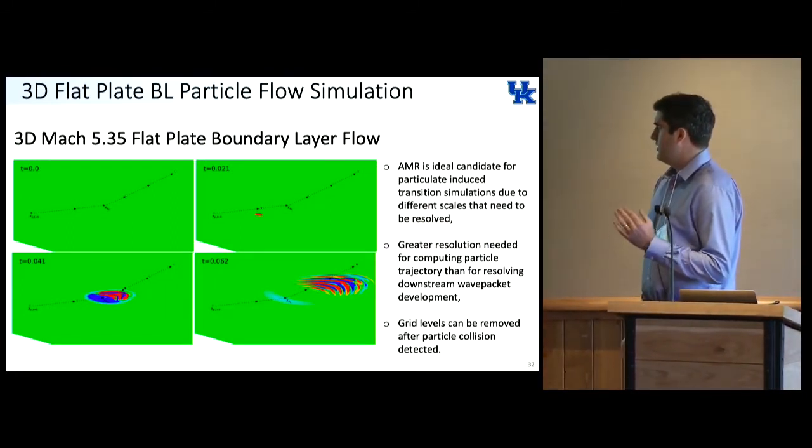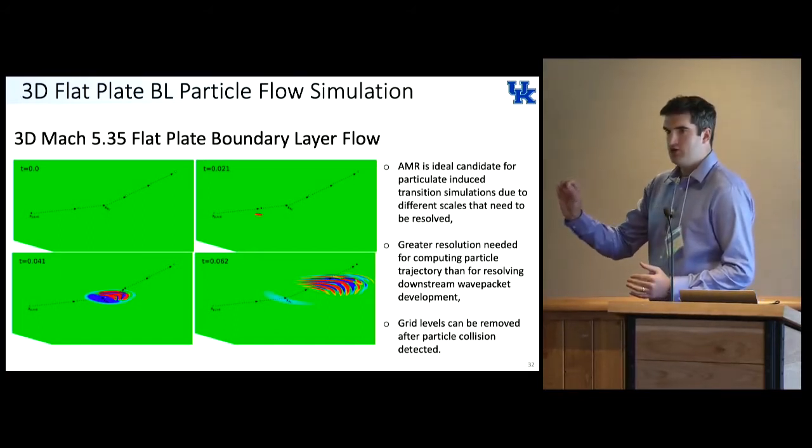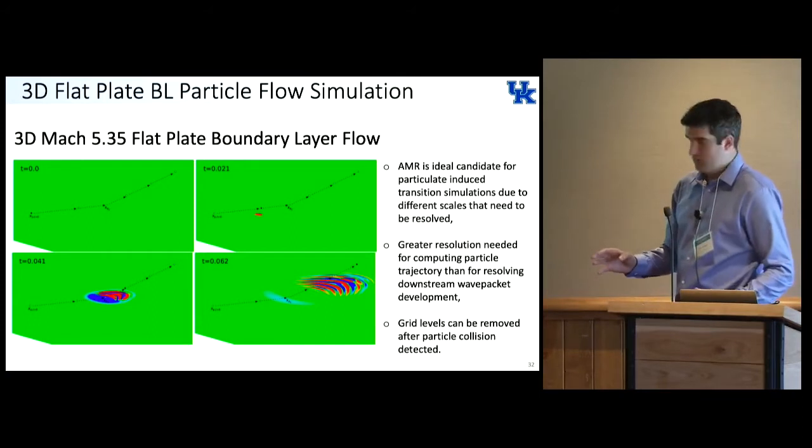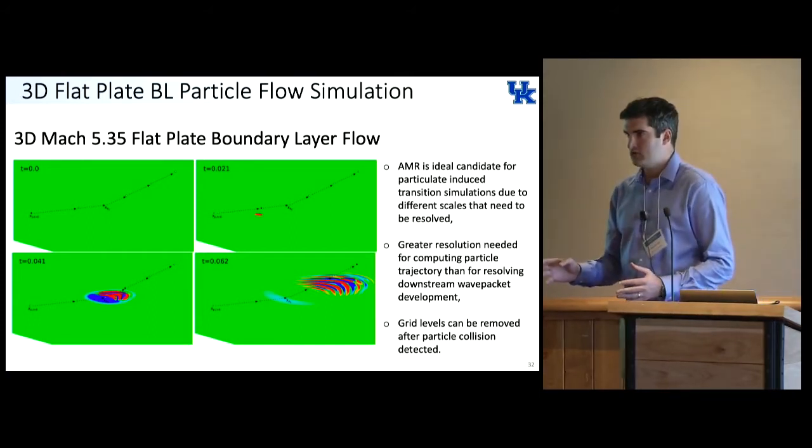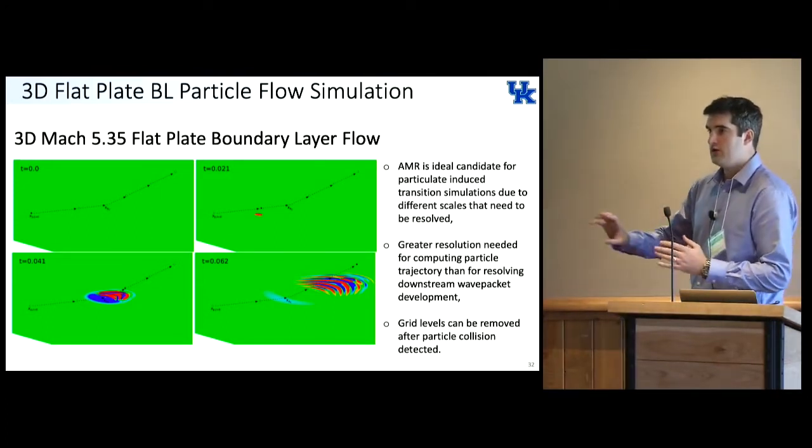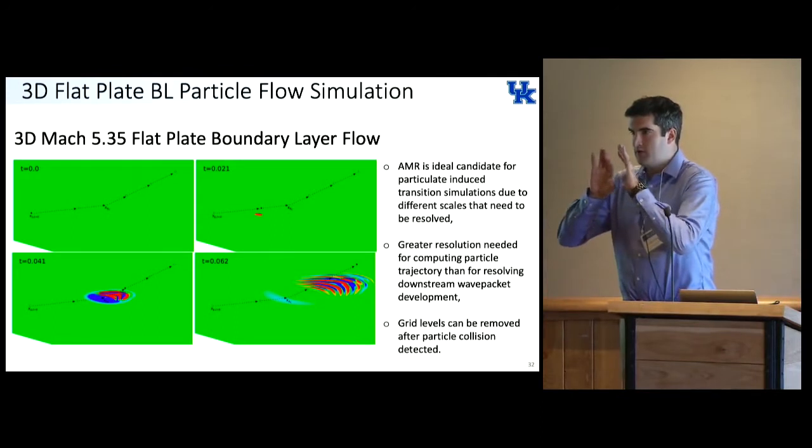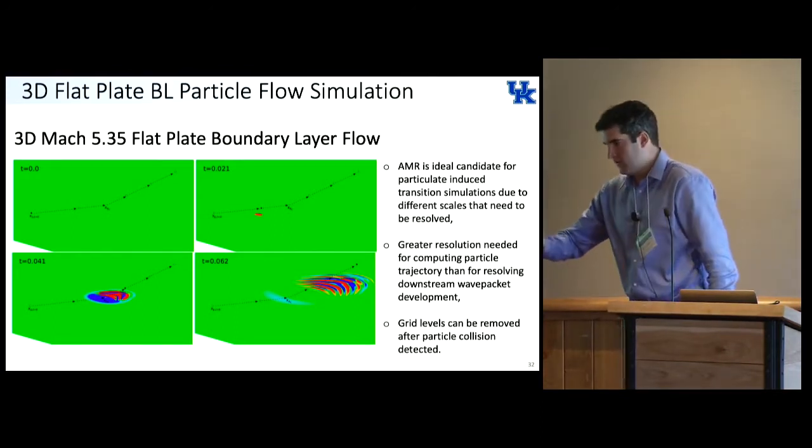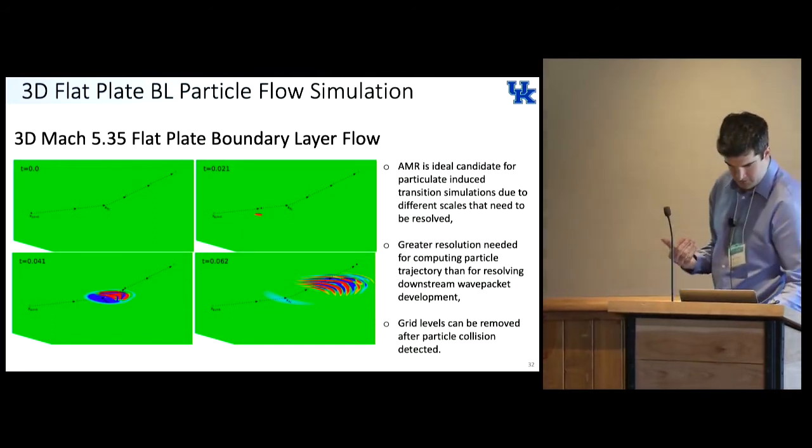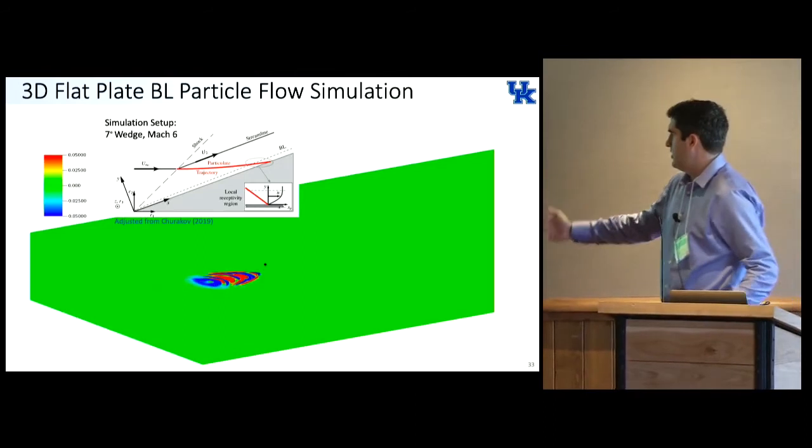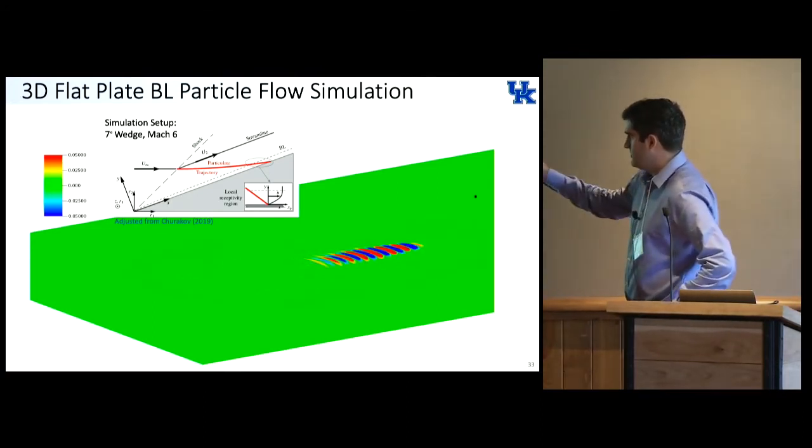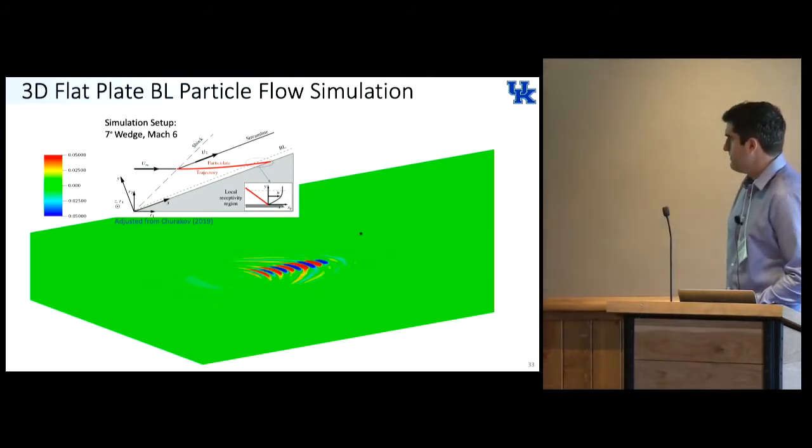Here we have the 3D flat plate boundary layer with the disturbance introduced with a particle. The reason that the AMR is an ideal candidate for these types of simulations is due to the different scales that need to be resolved. The scale to resolve the particle trajectory is a lot higher than the resolution needed to resolve the wave packet. We can begin the solution with more AMR grid levels resolving the particle. Then after we have the collision, we can pull levels away. This is just a simulation showing the perspective view, showing the particle collision, and then the disturbance pressure at the surface triggering the 2D wave packet.